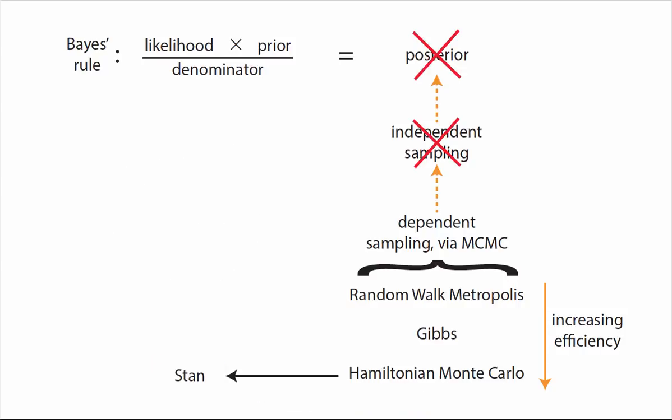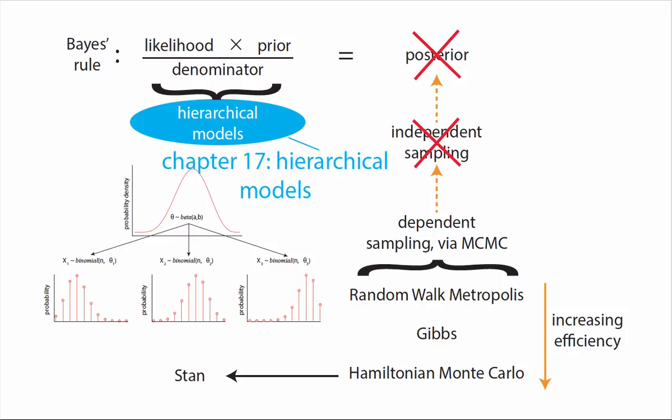The last part of the book is about an extension to the likelihood and prior framework which comes under the heading of hierarchical models. Chapter 17 introduces what is meant by a hierarchical model and talks about why hierarchical models are so useful across a large variety of circumstances.